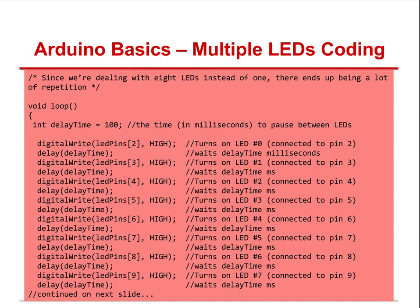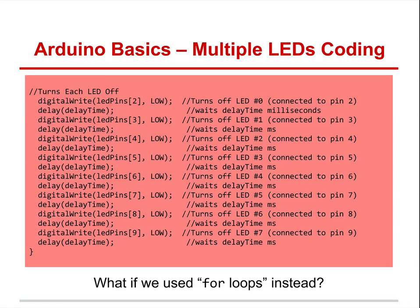Without loops, using eight lights, you'd have to set each one high individually and then each one low — writing out every single pin. The for loop makes this so much faster.